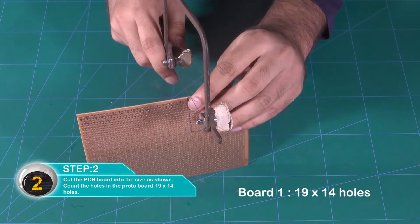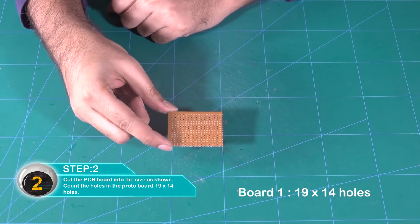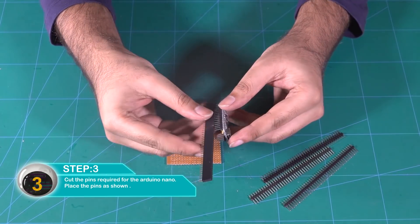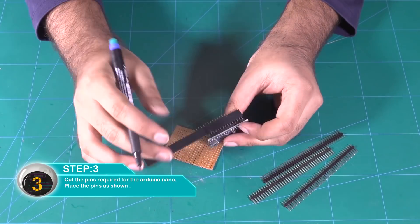Cut the PCB board to the size as shown. Count the holes in the proto board, 19 by 14 holes. Cut the pins required for the Arduino and place them as shown.